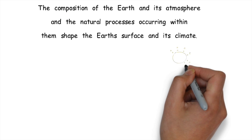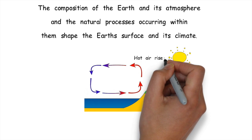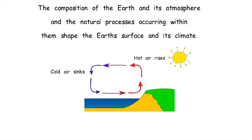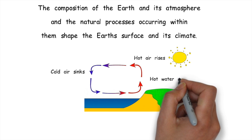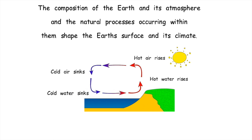At the Earth's surface, radiation from the Sun heats the surface and causes convection currents in the air, where hot air rises and cold air sinks. It also causes convection currents in the oceans, where hot water rises and cold water sinks, creating climates.